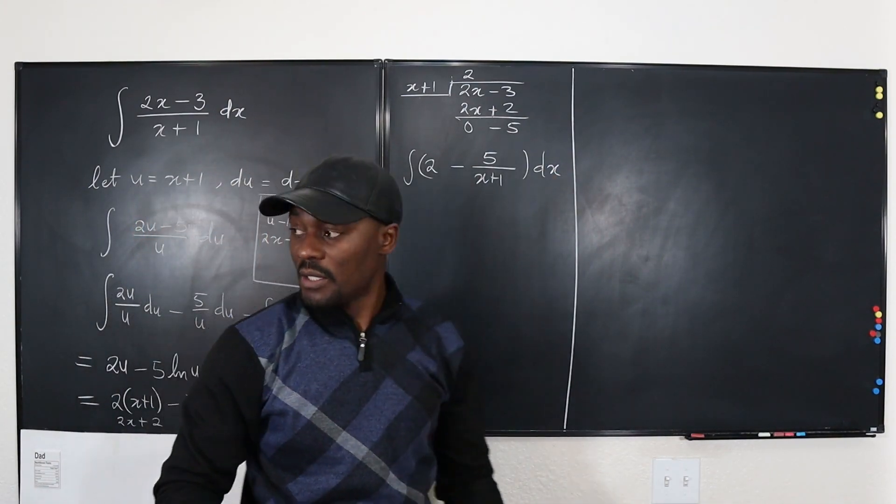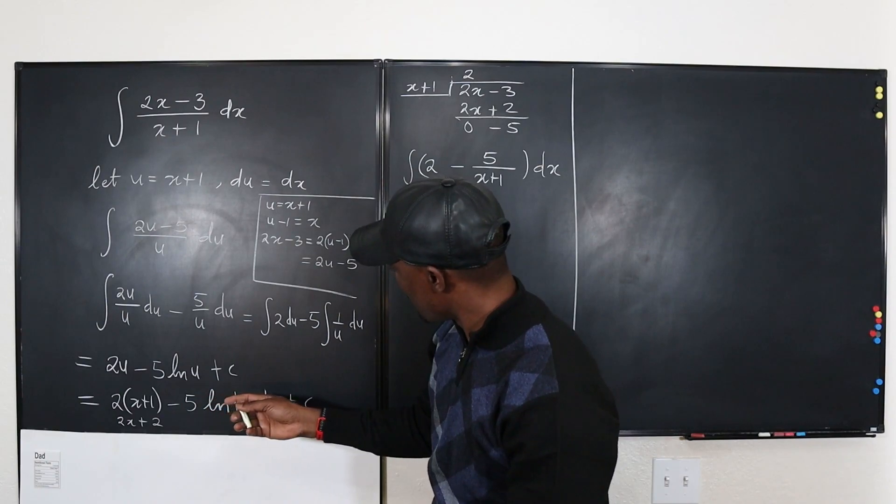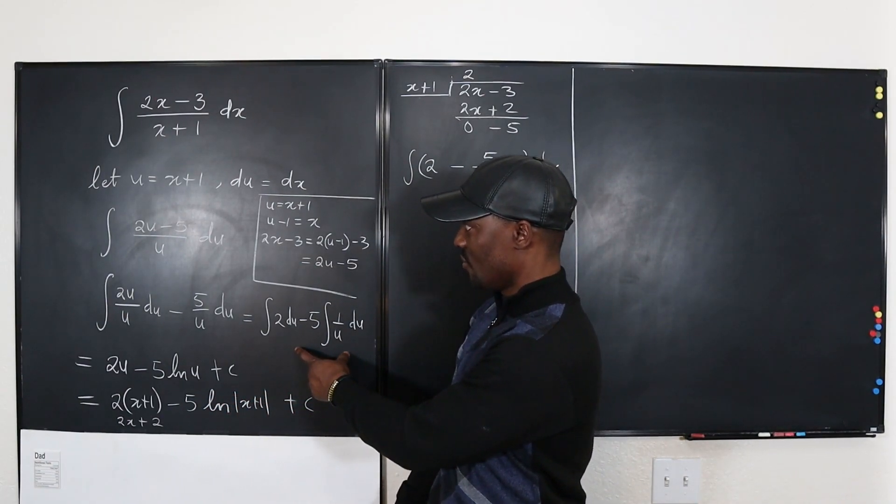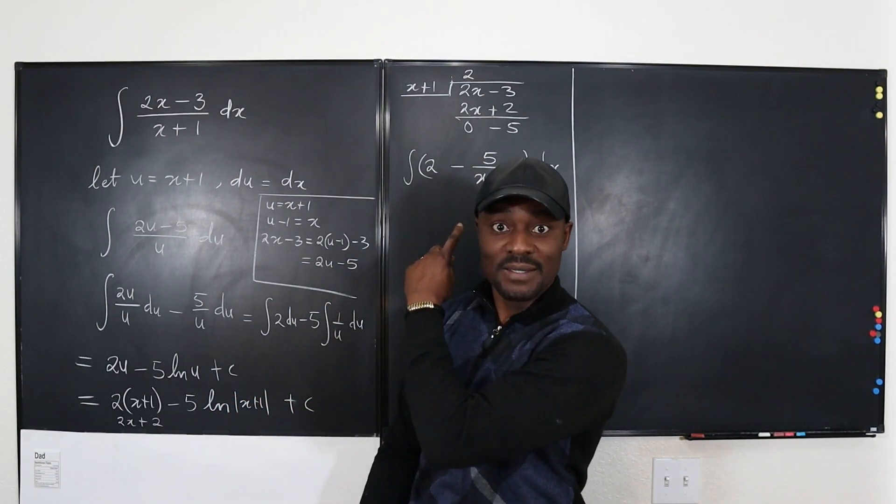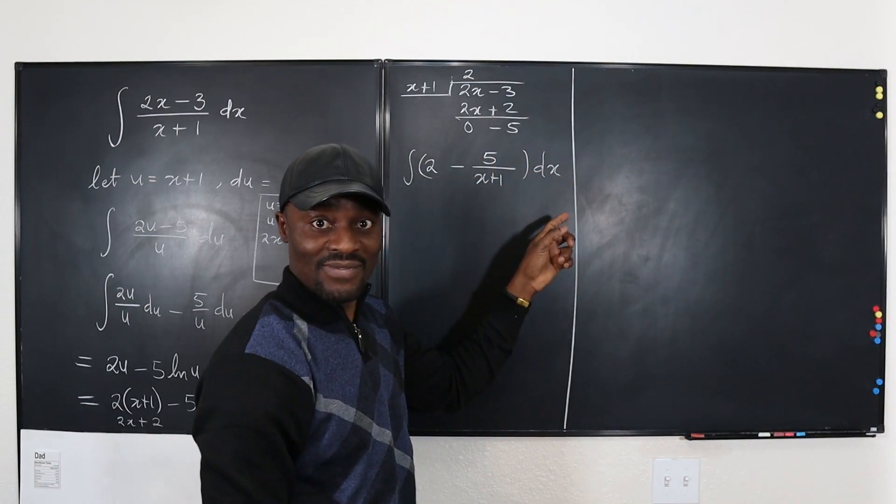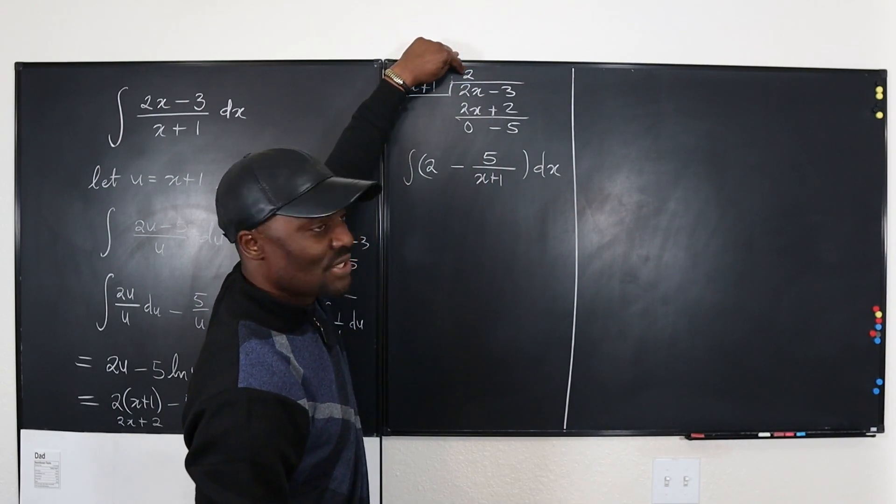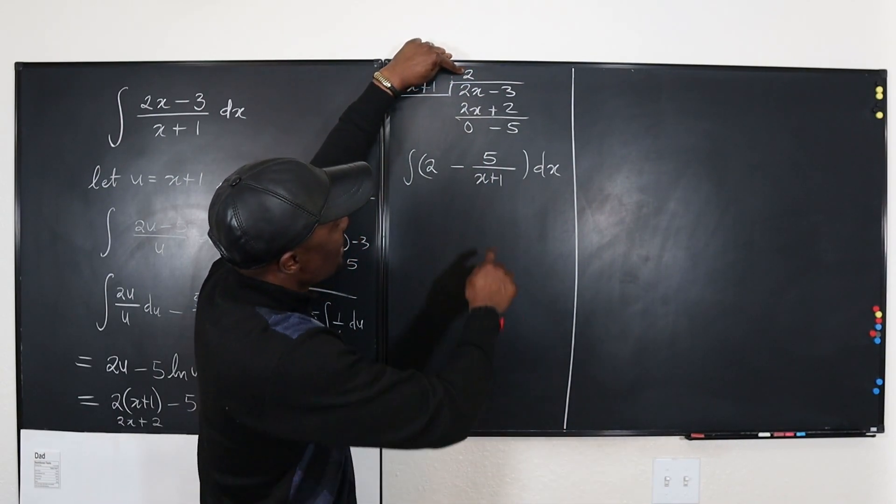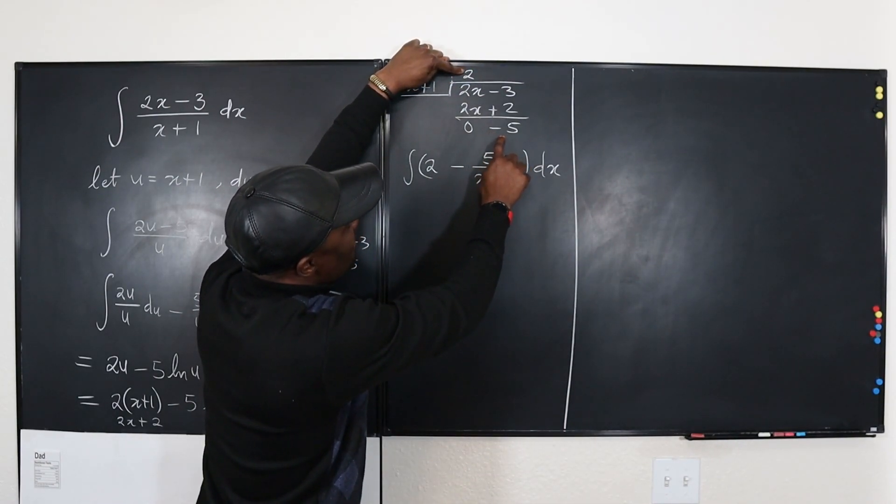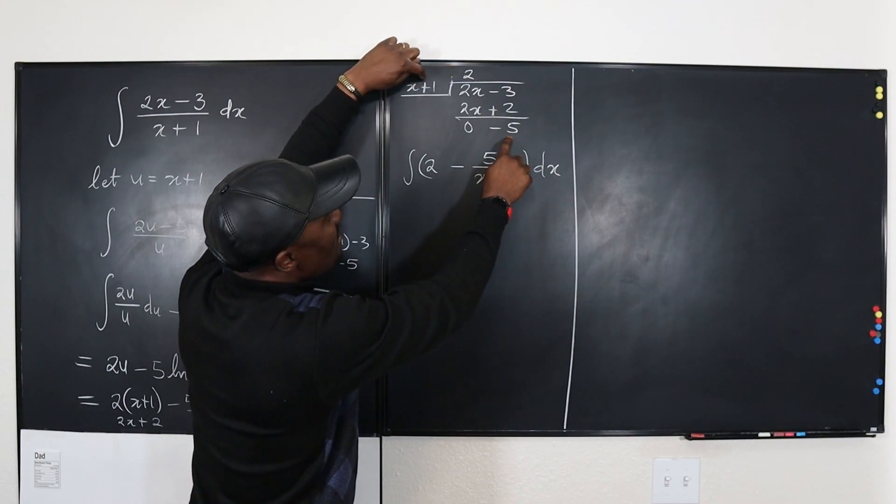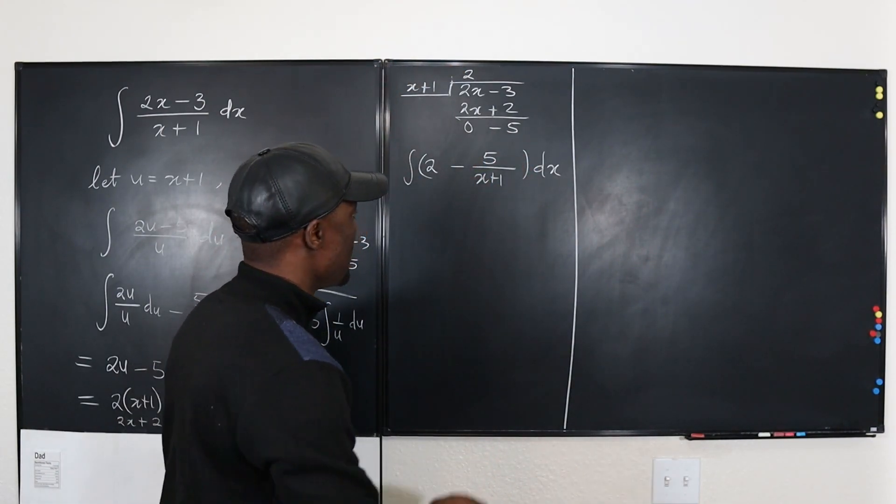There's nothing else to do. So it means this integral can be written as the integral of 2 minus 5 divided by X plus 1 dx. Which is what I think we got somewhere here. You see how quick this method is if you can do long division? You don't have to do U substitution.